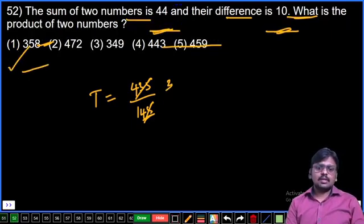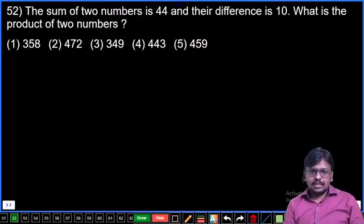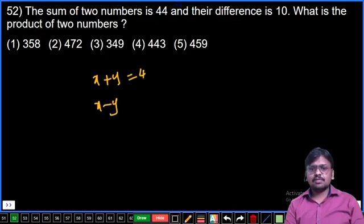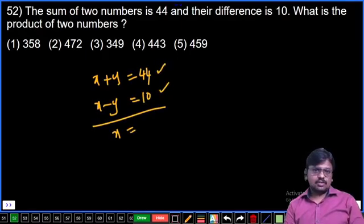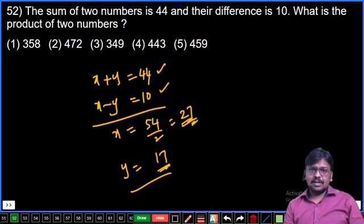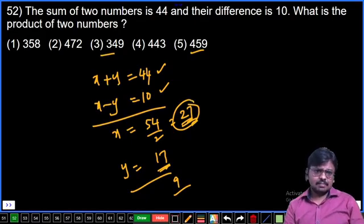Question number 52: The sum of two numbers is 44 and their difference is 10. What is the product of two numbers? Let x and y be the numbers. x plus y equals 44, x minus y equals 10. Add them: 2x equals 54, so x equals 27. Then y equals 27 minus 10, which is 17. Product: 27 times 17. 7 times 7 is 49, so the answer is 459, which is the fifth option. 27 is a multiple of 9, so we can verify.